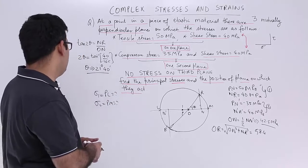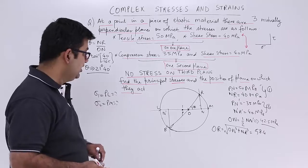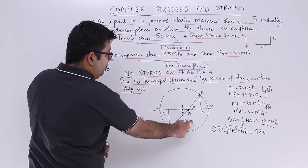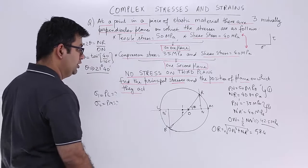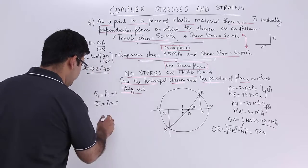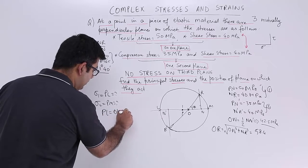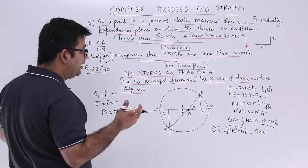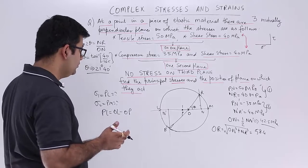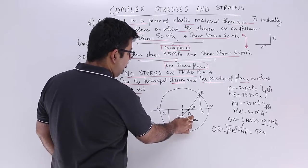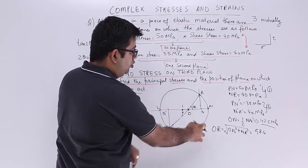So you will find out sigma 1 as PL and sigma 2 as PM. So this is what we have to find out. If I have to find out the value for PL that is sigma 1, so PL is equal to OL minus OP. So the value of PL is OL minus OP. Now how do you find OP?